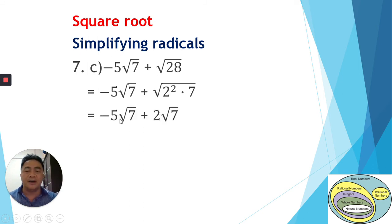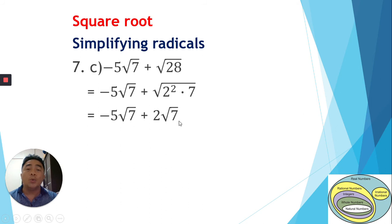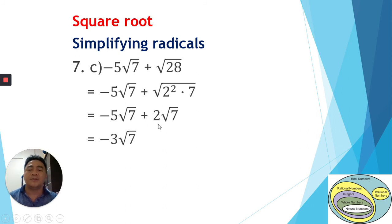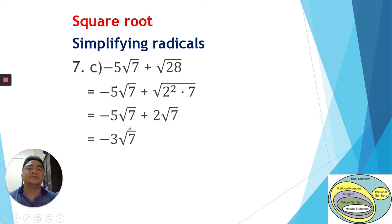We extract the perfect square from √28: the 2 comes out, giving us negative 5√7 plus 2√7. Now both terms have the same radicand √7. We add the coefficients: negative 5 plus 2 equals negative 3. The final answer is negative 3√7. The radical just stays with the coefficient — you do not add or multiply the radical itself.